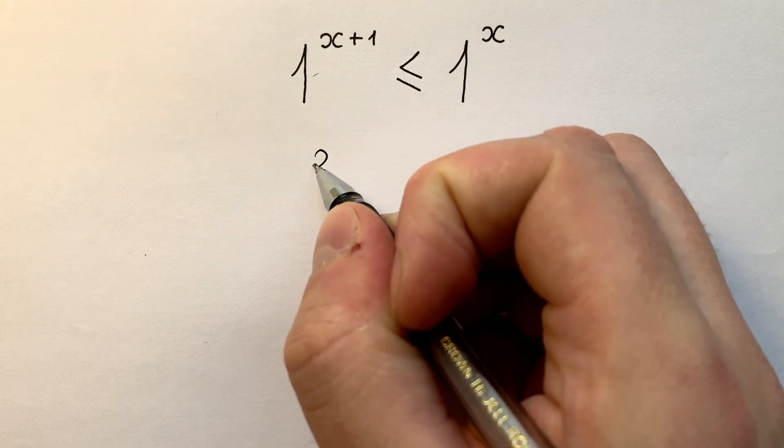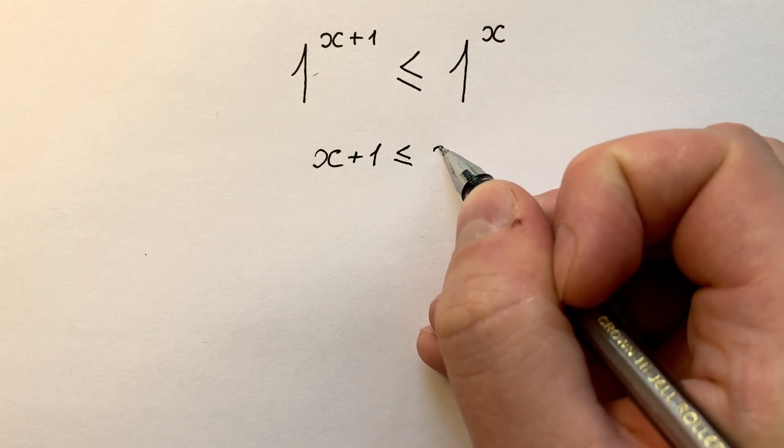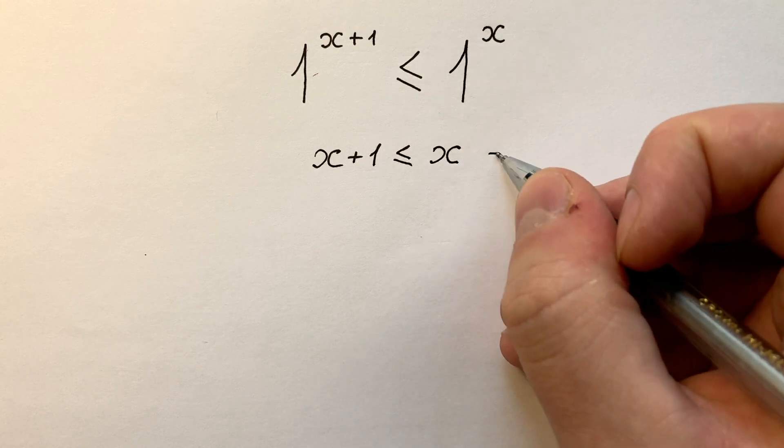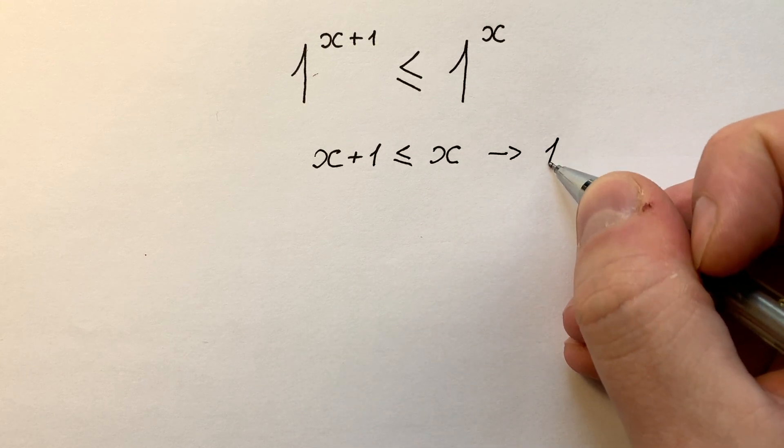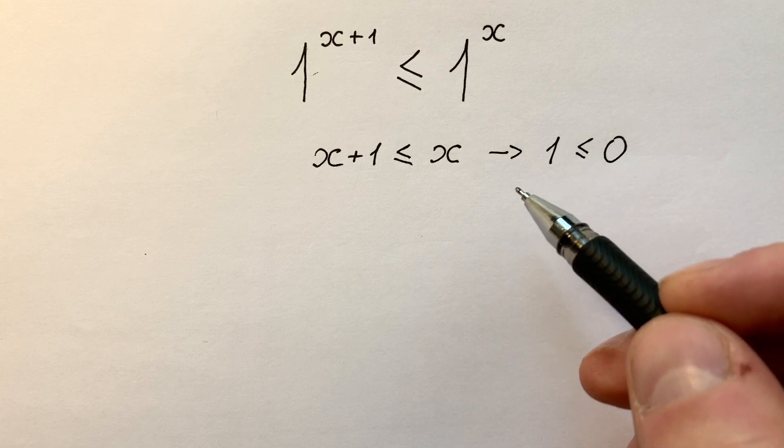...then x plus 1 is less or equal to x. But in this way we get that 1 is less or equal to 0. But it's nonsense.